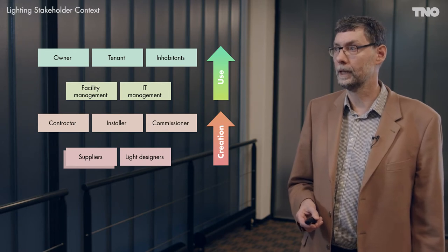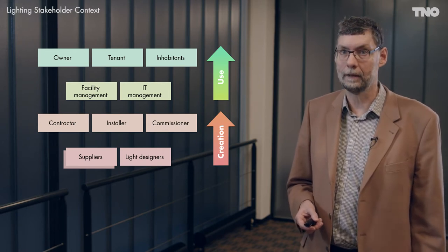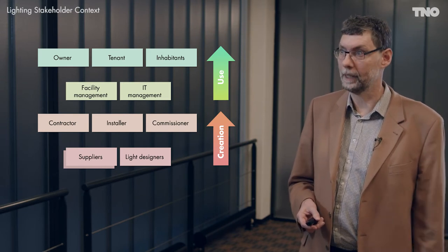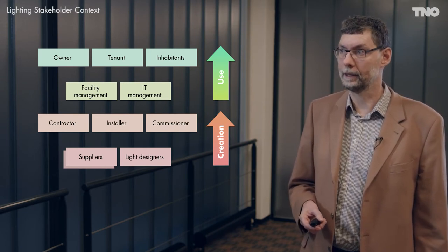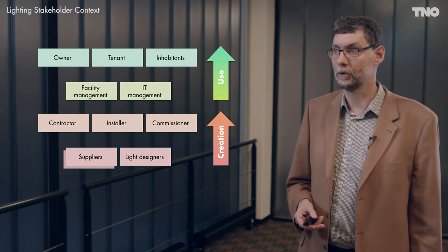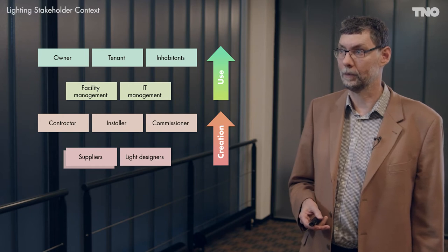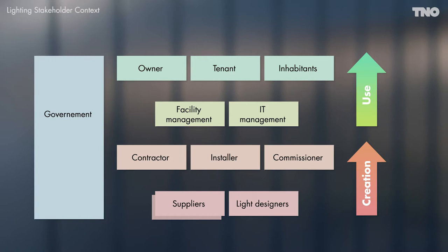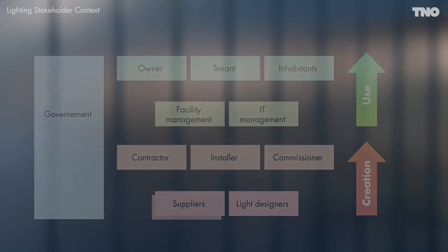When we design and build the system, the contractor, the installer, and the commissioner are active and they make sure that there is a proper installed and working lighting system. In turn, they get their system from the suppliers and the design for the light from the light designer. On the side, we have the government, which provides regulations to ensure that we have a system that fits the environmental concerns of society.